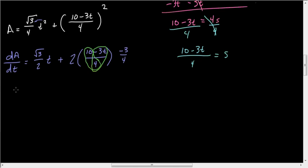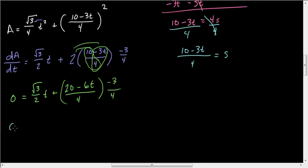We're going to set this equal to 0. So 0 equals square root of 3 over 2 T plus, and now I'm going to distribute this 2. I'm going to do this in two separate steps because I don't want to lose myself in the algebra. This is going to be 20 minus 6T all over 4, and I've got to multiply that by negative 3 over 4. Just multiply through by that negative 3 on top, so I'm going to have 18T minus 60 all over 16.